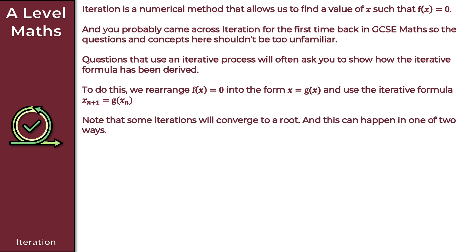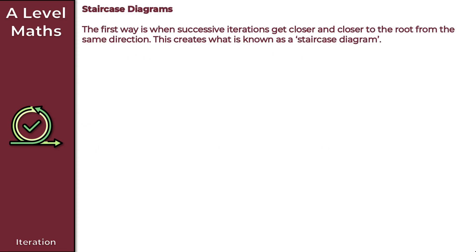Note that some iterations will converge to a root, and this can happen in one of two ways. Let's look at these two situations in more detail. The first method uses something called staircase diagrams. The first way is when successive iterations get closer and closer to the root from the same direction, and this creates what is known as a staircase diagram.